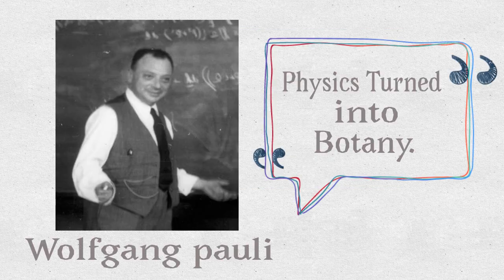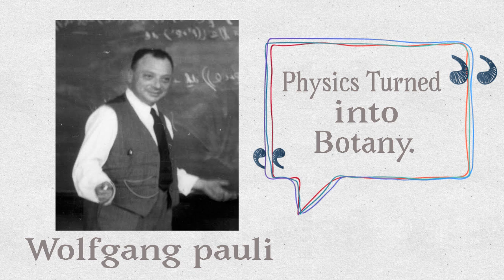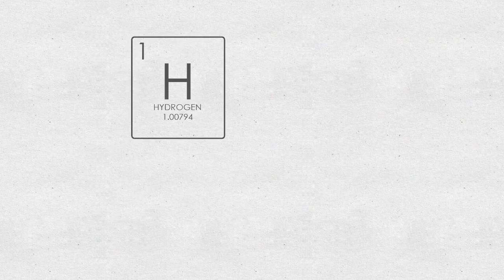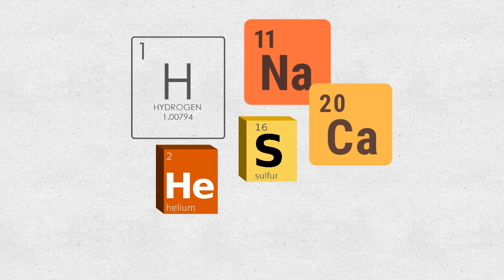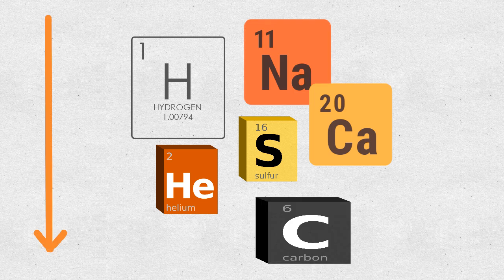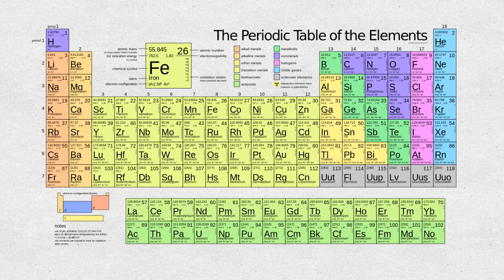There were so many particles that influential physicist Wolfgang Pauli joked that physics was turning into botany. So it was like we have so many elements, so to understand and study them, we classify them in groups and periods, which is known to all as the periodic table.